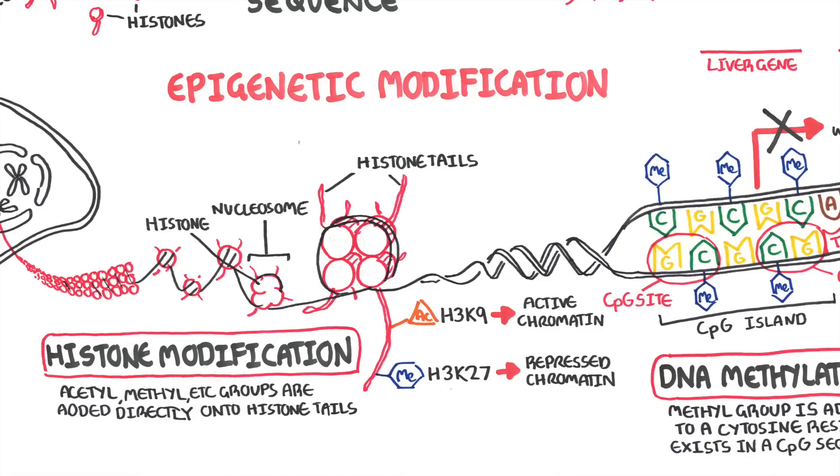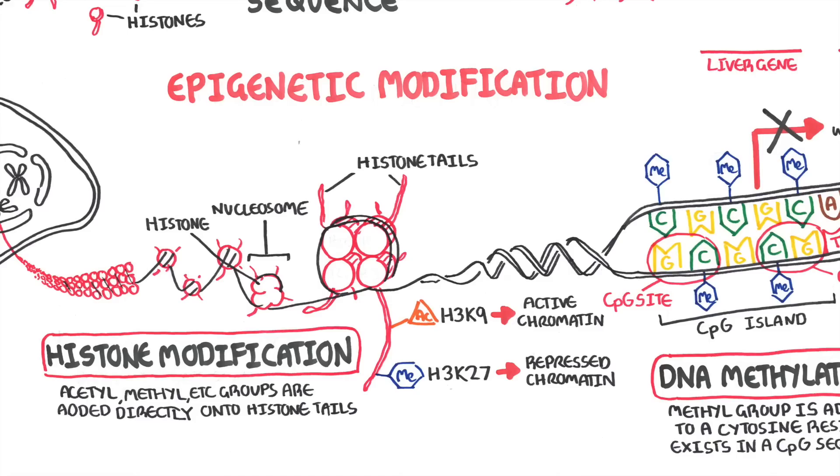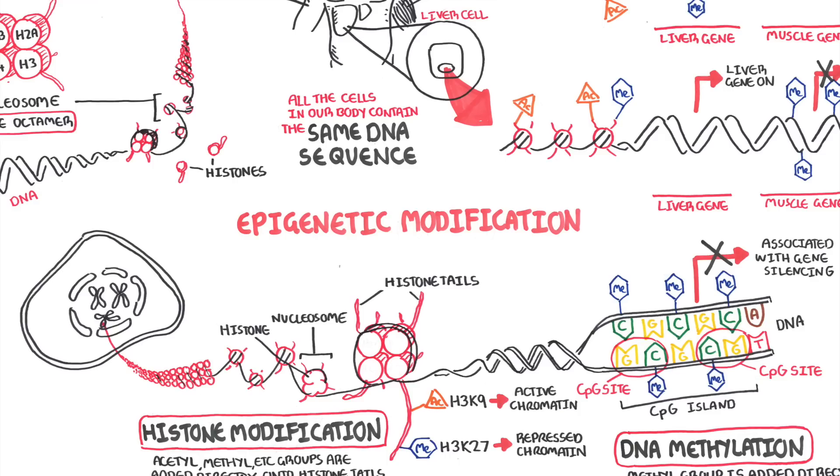Genome-wide patterns of DNA and histone modifications, or epigenome, are established during early development and are maintained during cell division. In cancer, these patterns are altered and disrupted.